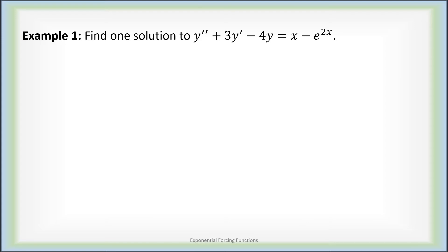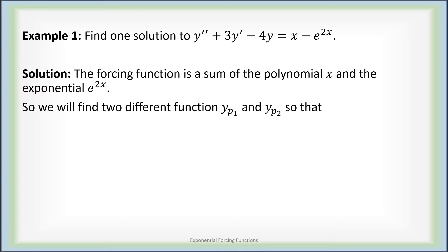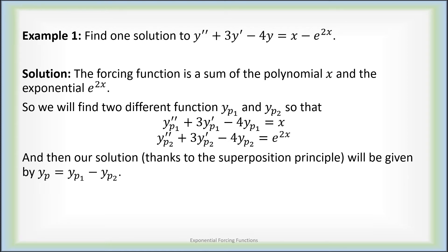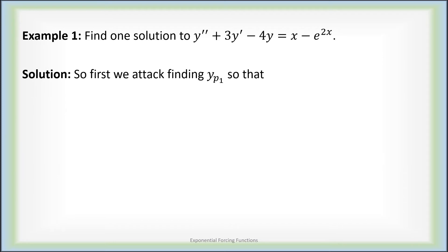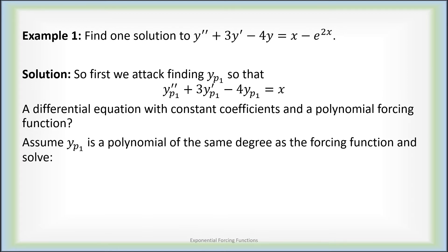Let's put theory into practice by finding one particular solution to y'' + 3y' - 4y = x - e^(2x). The forcing function is a sum of two things: the polynomial x and the exponential term e to the 2x. So we're going to find two different functions, yp1 and yp2, so that yp1 produces the term x and yp2 produces the term e to the 2x. Then by the superposition principle, our solution yp will just be the difference of those two things. We try to find yp1 by assuming it's a polynomial of the same degree as the forcing function — degree one — so we try yp1 = ax + b, its first derivative is just a, and its second derivative is zero.